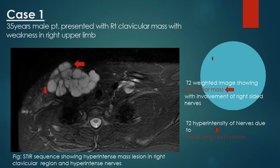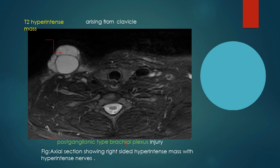Case 1: A 35-year-old male presenting with a right clavicular mass and weakness in the right upper limb. The STIR image shows a hyperintense mass in the right clavicular region with hyperintense nerves and edema. In the axial section, there is also T2 hyperintensity arising from the clavicular region. This is suggestive of a postganglionic type of brachial plexopathy — with thickening, edema, and T2 hyperintensity at the clavicular level — which carries a favorable prognosis.